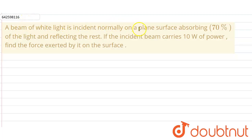A beam of white light is incident normally on a plane surface absorbing 70% of light and reflecting the rest. If the incident beam carries 10 watt of power, find the force exerted by it on the surface.